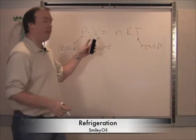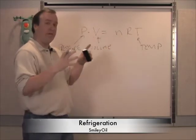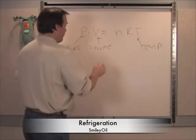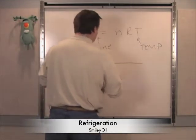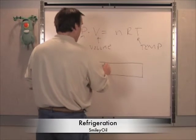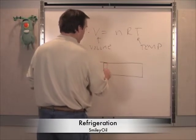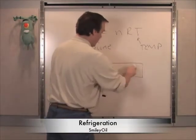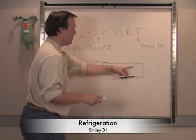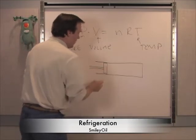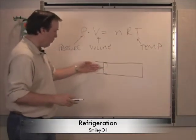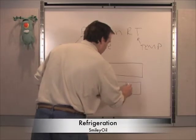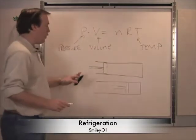We threw a paint can in the fire — the volume was the fixed paint can, the temperature went up, and we exploded the paint can. In this next scenario, we're going to take a tube with a piston. In here we have a certain pressure, volume, and temperature — a starting volume, starting pressure, and starting temperature. Now we're going to put in some work and compress this gas.